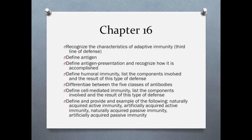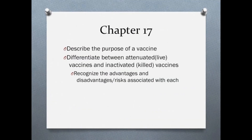Finally, you will need to be able to differentiate between the types of acquired immunity and provide examples of each. Table 16.4 summarizes the types of acquired immunity. In Chapter 17, we focused on vaccination, learning the types of vaccines and what they are used for. You should be able to describe the purpose of vaccination and distinguish between attenuated vaccines and inactivated vaccines, recognizing the advantages and disadvantages or risks associated with each type. Pages 496 and 497 of your textbook address the two vaccines.